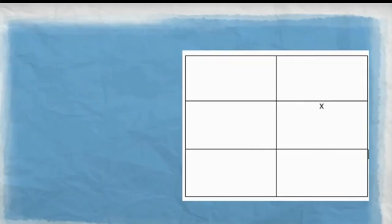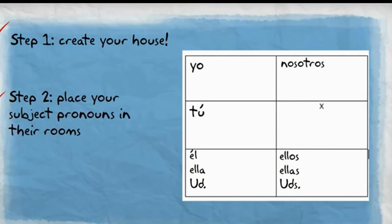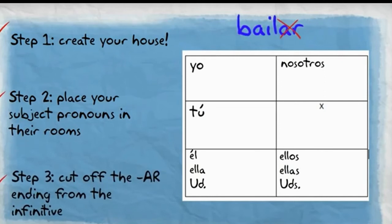Let's try it again. Step one: create your house. Step two: place your subject pronouns in each room. Step three: cut off the AR verb ending from the infinitive.